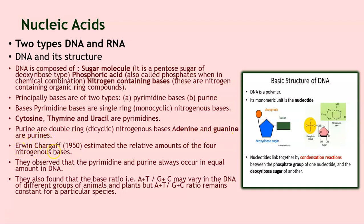Edwin Chargaff in 1950 established the relative amounts of the four nitrogen bases. He observed that purines and pyrimidines always occur in equal amounts in DNA — the base ratio A+T or G+C may vary in the DNA of different groups of animals and plants, but their ratio always remains constant for a particular species.